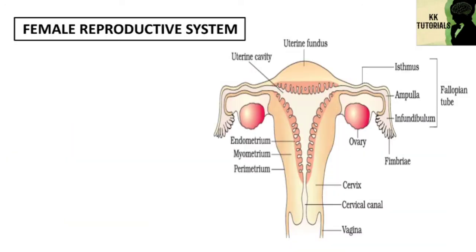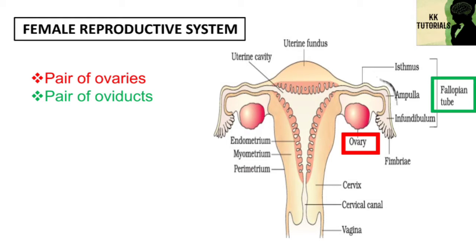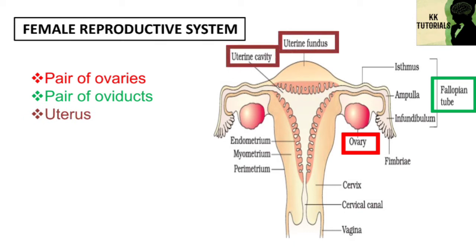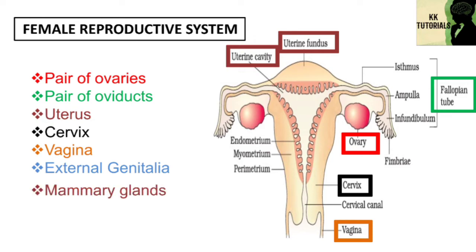The female reproductive system consists of a pair of ovaries, along with a pair of oviducts also called as fallopian tubes, uterus, cervix, vagina and the external genitalia located in the pelvic region. These parts of the system along with the pair of mammary glands are integrated structurally and functionally to support the process of ovulation, fertilization, pregnancy, birth and child care.